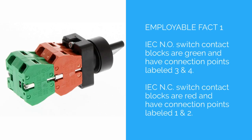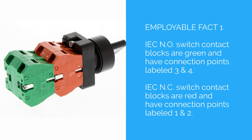Employable Fact 1: IEC normally open switch contact blocks are green and have connection points labeled 3 and 4. IEC normally closed switch contact blocks are red and have connection points labeled 1 and 2.